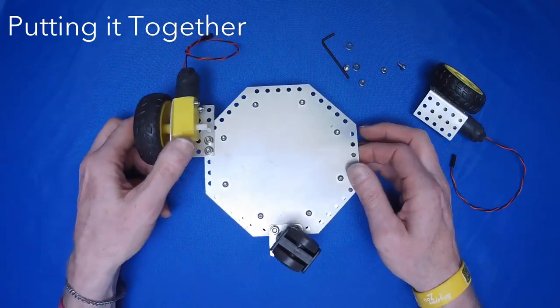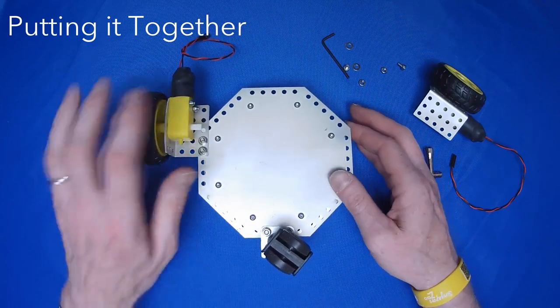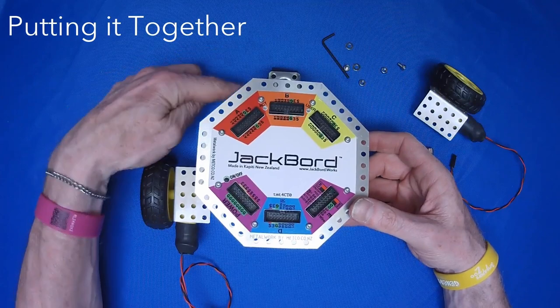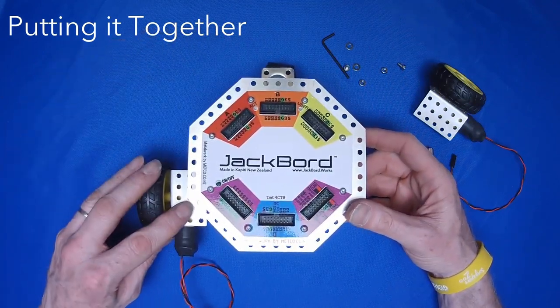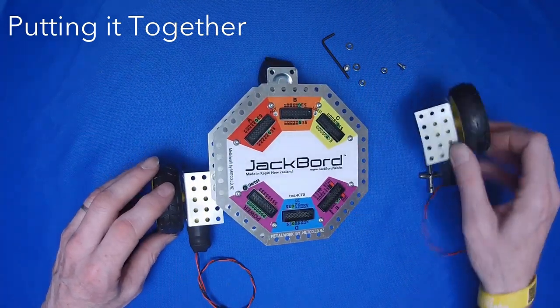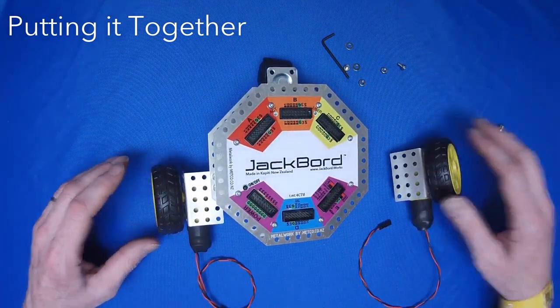So now we have our left motor attached. So if we flip it back over, we have the trolley wheel in the front and our left motor attached on the left hand side. And next we will attach the right hand drive motor.